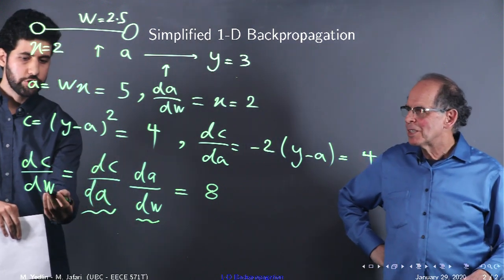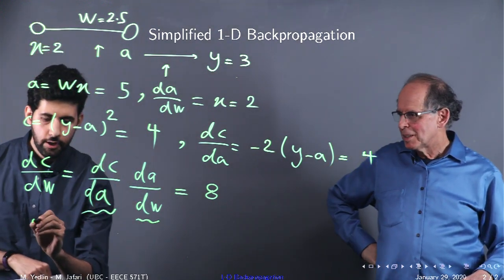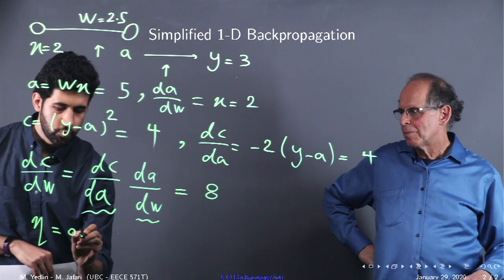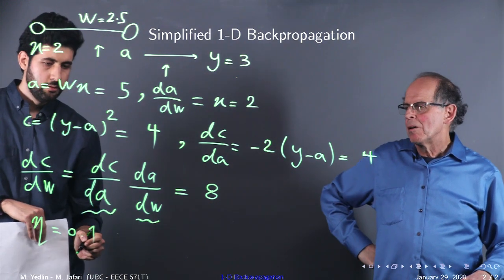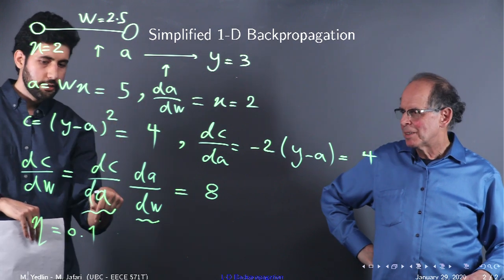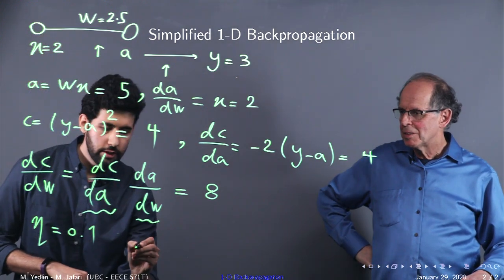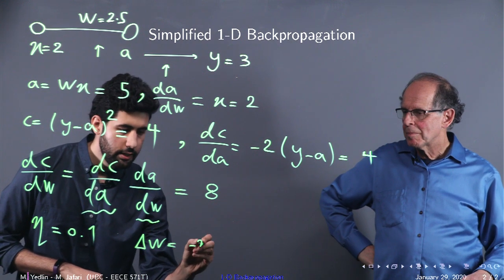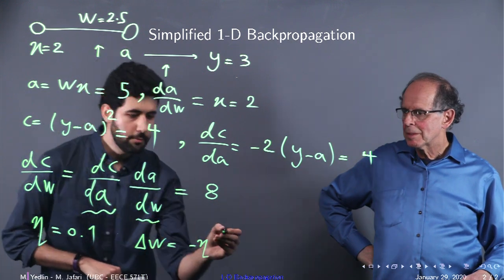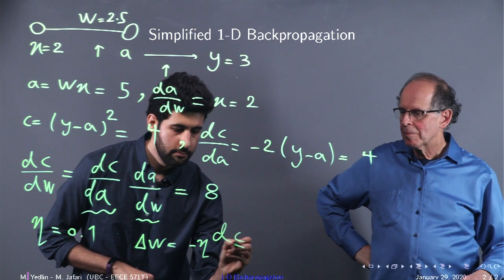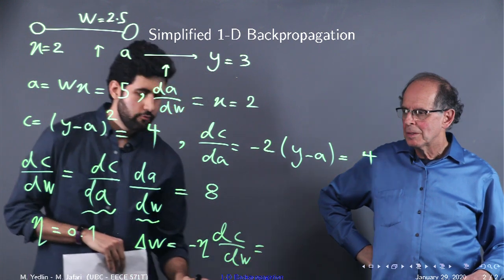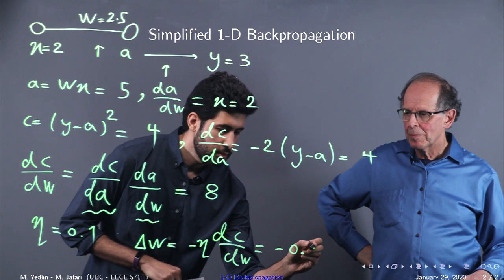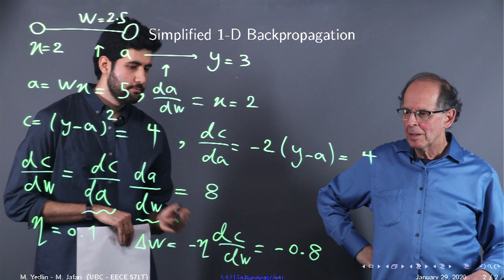Now we want to change W, so we can have a eta like 0.1. Okay. And we want to go down the hill, so we just change W, delta W equals to minus eta dcdW, which would be minus 0.8. Okay.